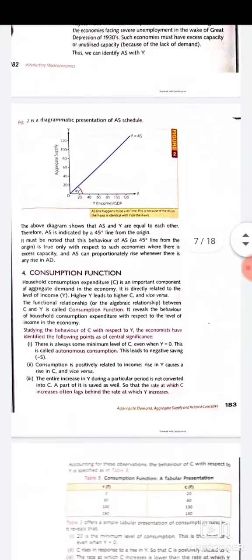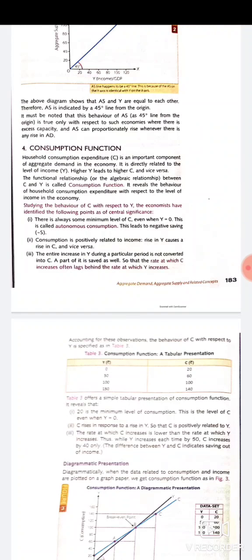Next is the consumption function. Household consumption expenditure is an important component of aggregate demand and is directly related to the level of income — higher income means higher consumption, and lower income means lower consumption expenditure. The relationship between income and consumption is called the consumption function. Studying the behavior of consumption with respect to income, economists have identified certain points of central significance.